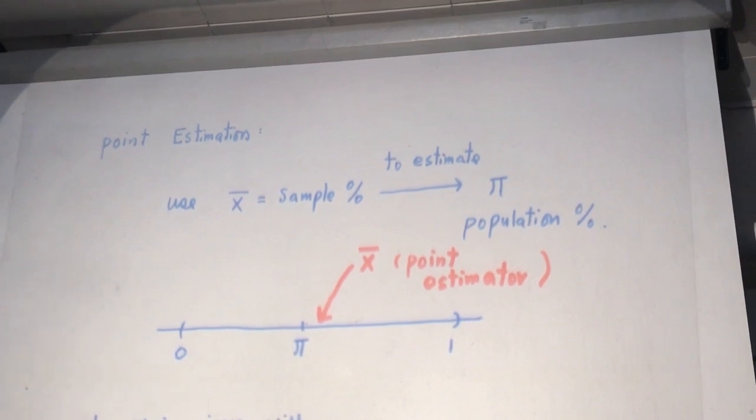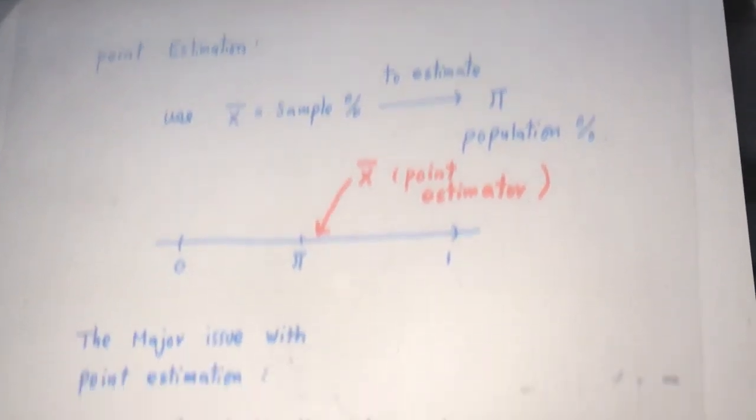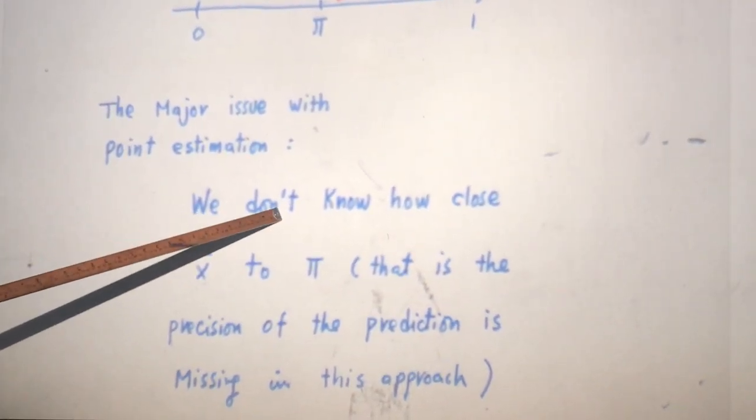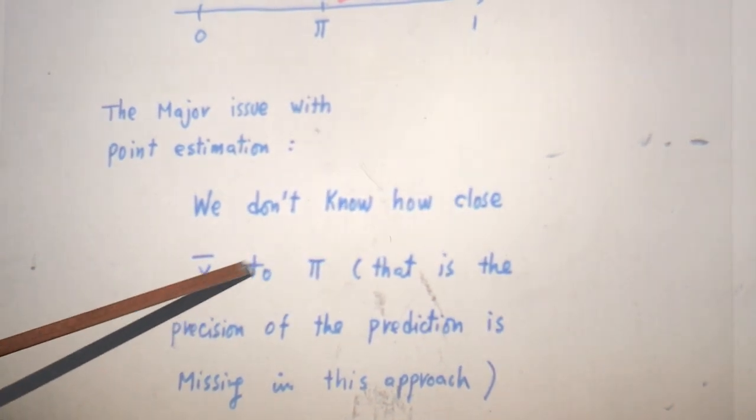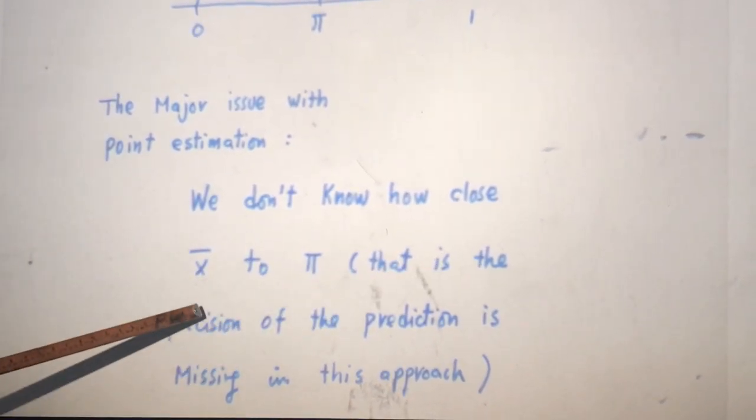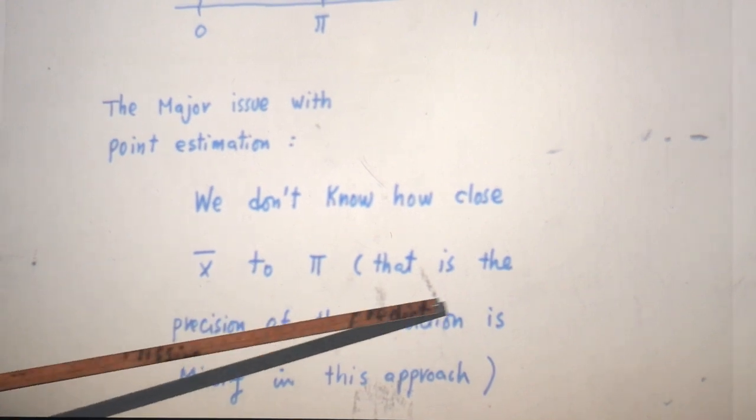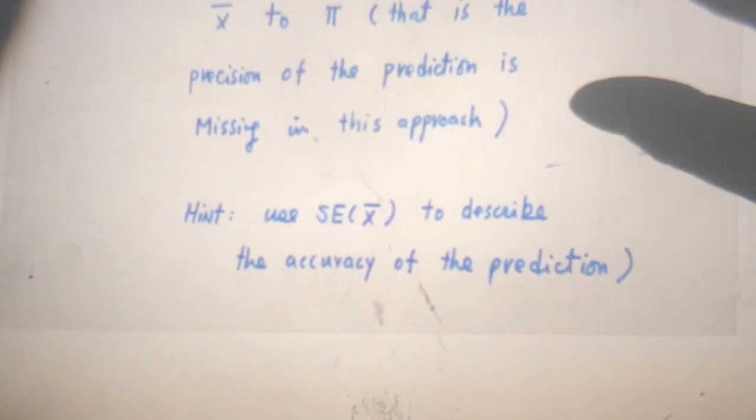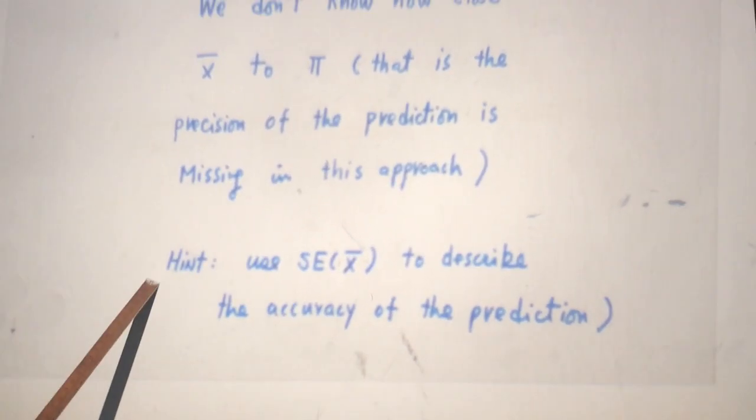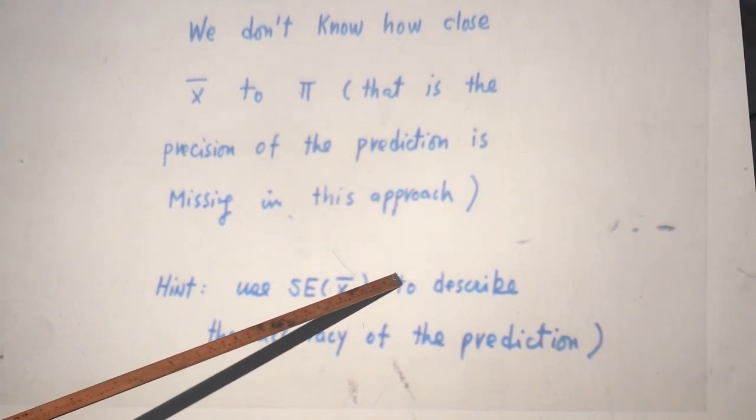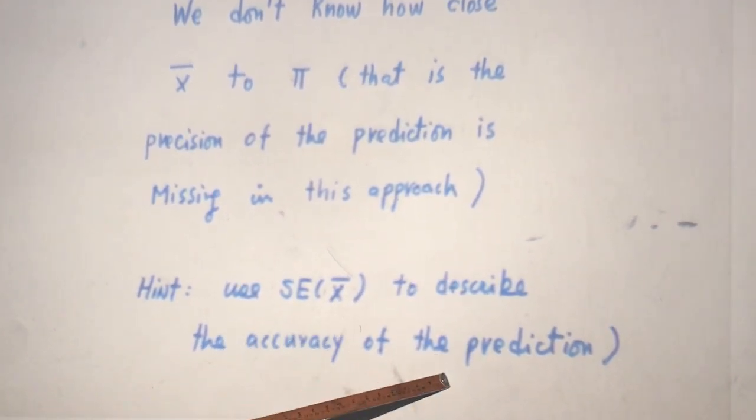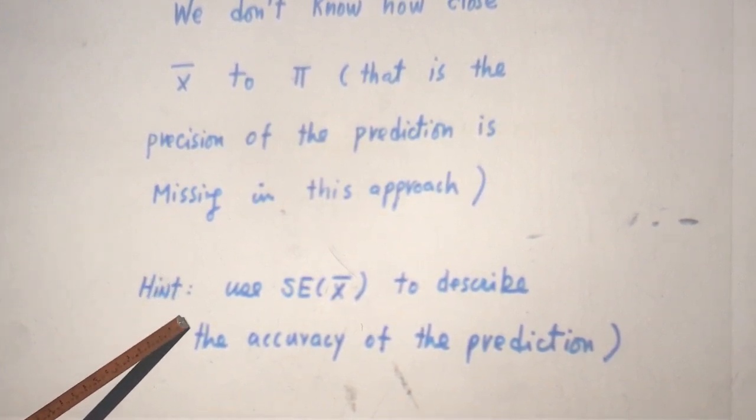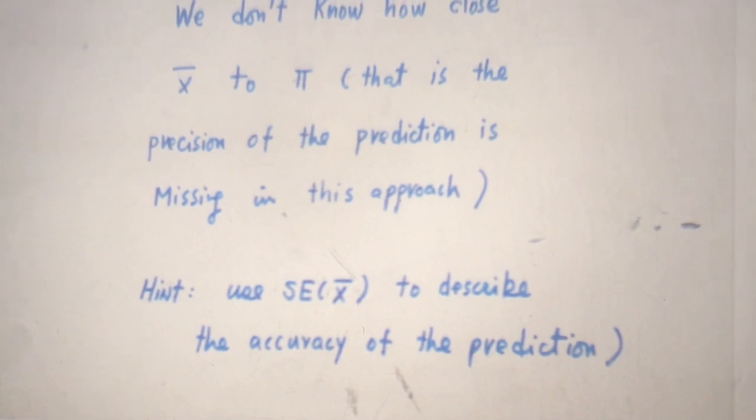What is the major issue with point estimation? Well, the major issue with this approach is we don't know how close x bar to pi. That is to say the precision of the prediction is missing in this approach. Although if you learn more of the advanced course, you may find they use standard error of x bar to describe the accuracy of the prediction. But still, it's not a perfect way. It's not a better way.